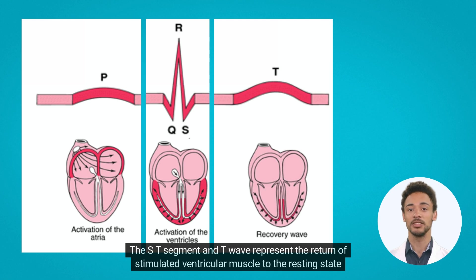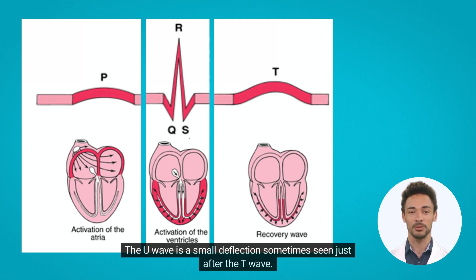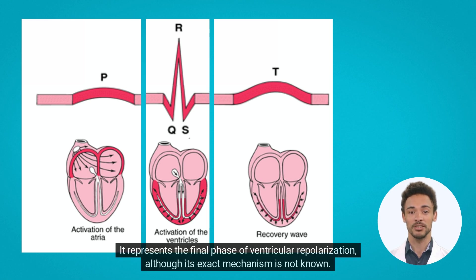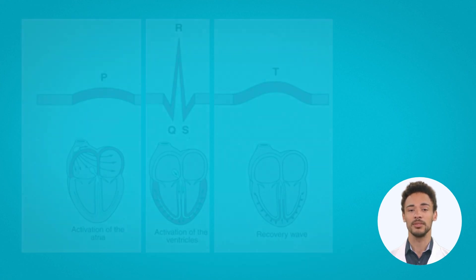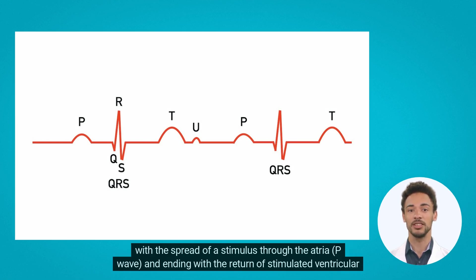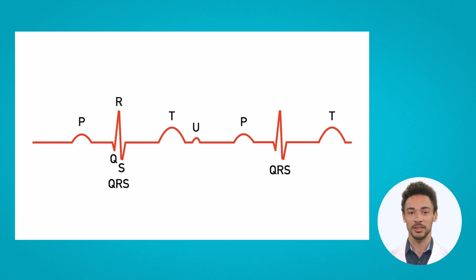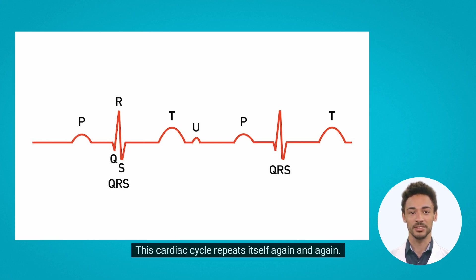The ST-segment and T-wave represent the return of stimulated ventricular muscle to the resting state – ventricular repolarization. The U-wave is a small deflection sometimes seen just after the T-wave; it represents the final phase of ventricular repolarization, although its exact mechanism is not known. The P-Q-R-ST sequence represents the repetitive cycle of electrical activity in the heart, beginning with the spread of a stimulus through the atria and ending with the return of stimulated ventricular muscle to its resting state. This cardiac cycle repeats itself again and again.